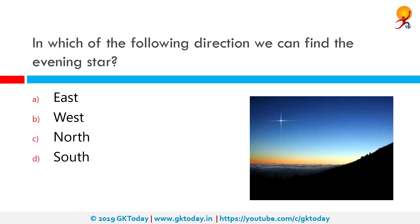In which of the following directions can we find the evening star? The correct answer is west. Venus hangs low in the western sky at sunset and is called the evening star, rising higher each night. Anyone with a clear view of the western horizon can spot Venus with the naked eye just after the sun sets and for about an hour thereafter, though finding it low on the horizon amid the sun's fading glare is not very easy.